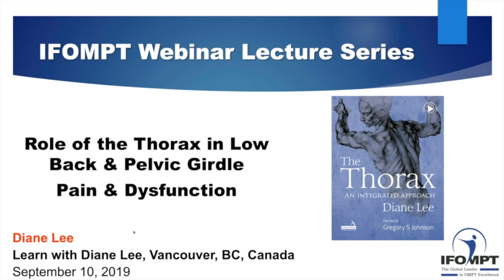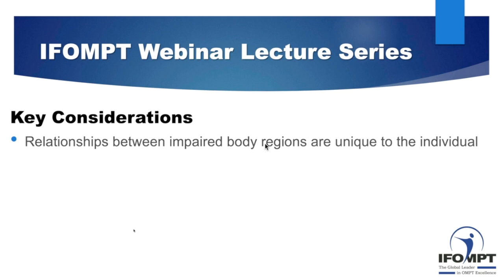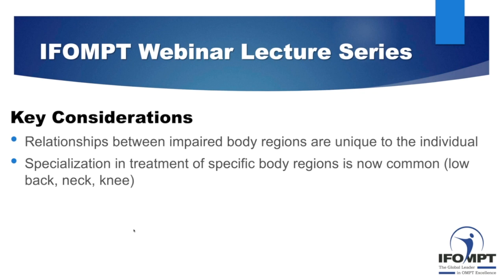Today we're going to talk about the relationship of the thorax with respect to low back and pelvic girdle pain. Before we get into that, there are a couple of considerations to note. First, when we look at impaired body regions, they are unique to the individual, which means you can have impaired function in the pelvis and impaired function in the thorax, and they may not present with exactly the same functional impairments nor the same symptoms. Just because we have impaired body regions doesn't necessarily mean they are relevant to why the person is presenting with you today.